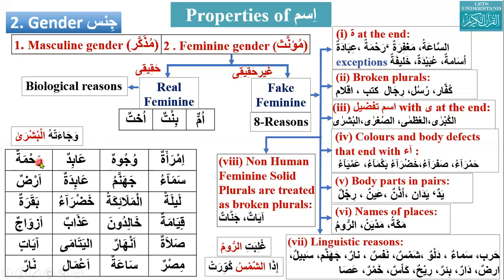Rahmatun — feminine. Why? Ta marbuta at the end. Sama — what is the meaning? Sama is sky. It's feminine. Why? Linguistic reason. And Jahannam? Also linguistic reason, feminine.